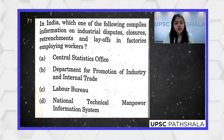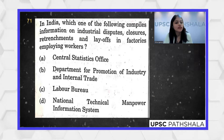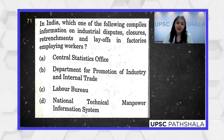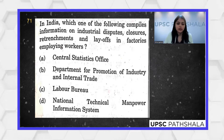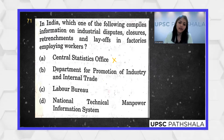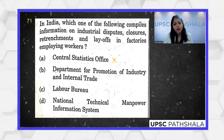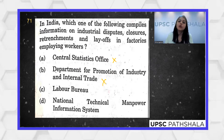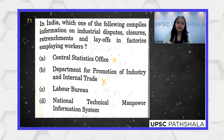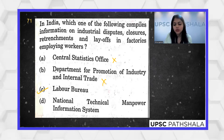In India, which of the following compiles information on industrial disputes, closures, retrenchments, and layoffs? The Central Statistics Office would not maintain such minute data on employees, so it can be ruled out by common sense. The Department for Promotion of Industry and Trade is also obviously incorrect. The Labour Bureau is the most apt organization to handle labor rights, and with the codification of labor laws this year, Labour Bureau becomes important. It is the correct answer.